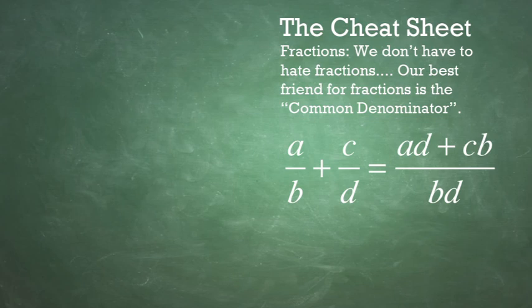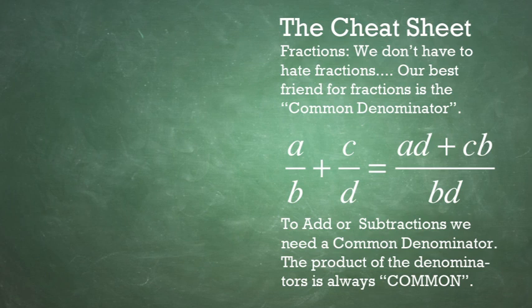Therefore, A over B plus C over D is equal to A times D plus C times B all over B times D. The common denominator is B times D. To add or subtract fractions, we need a common denominator.